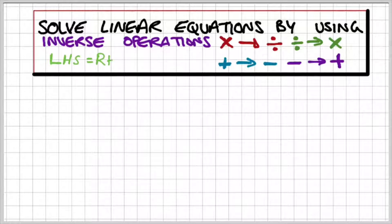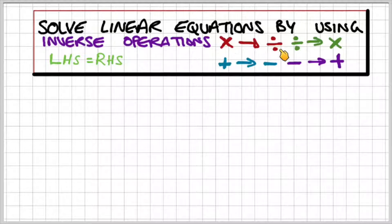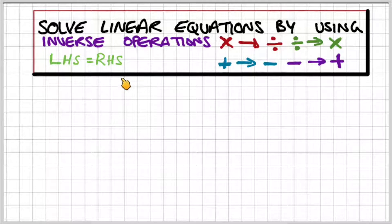The most important rule is whatever you do to the left-hand side, you have to do to the right-hand side. So if you're going to use inverse operations — if you're going to multiply the left-hand side by 2, you have to multiply the right-hand side by 2. This ensures that the equation is always balanced.